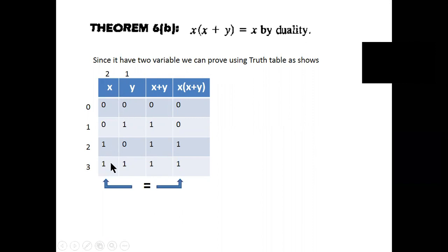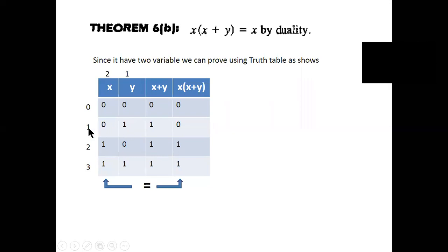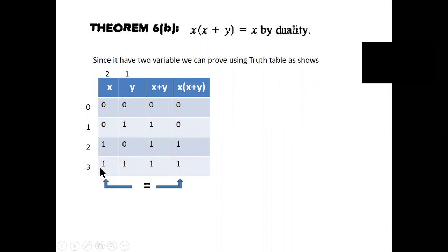How many variables are there? Two variables: x and y. We write all possibilities using binary numbers: 0,0 — 0,1 — 1,0 — 1,1. These are the four binary combinations for two variables.